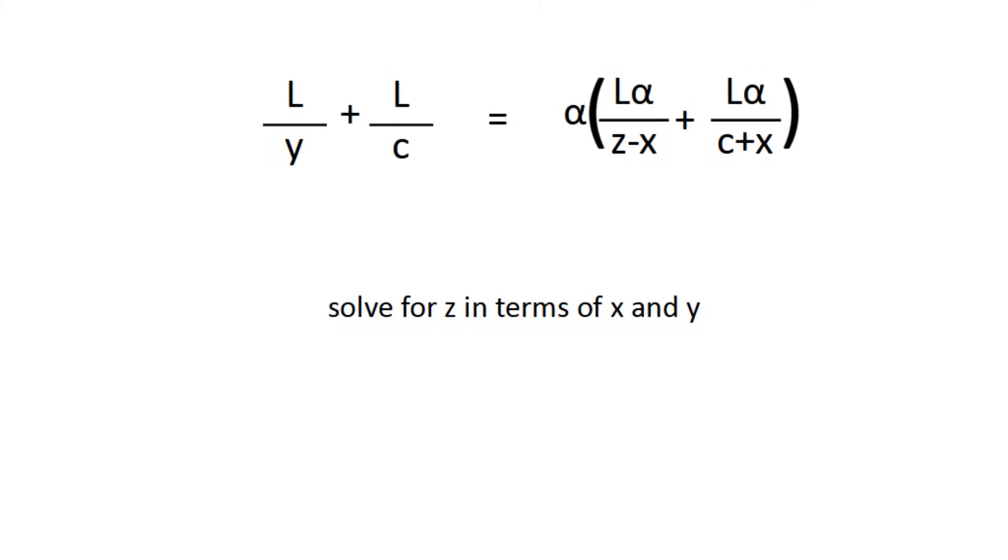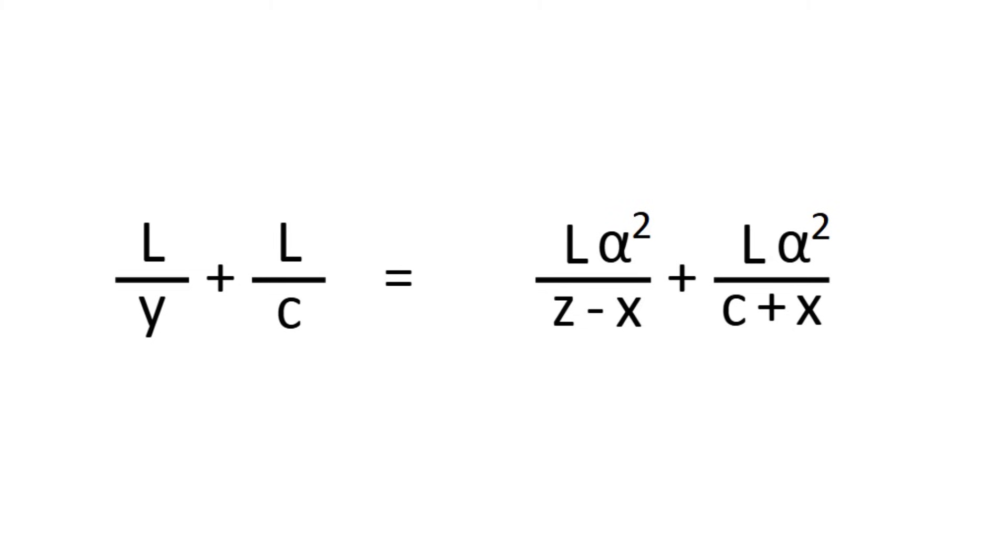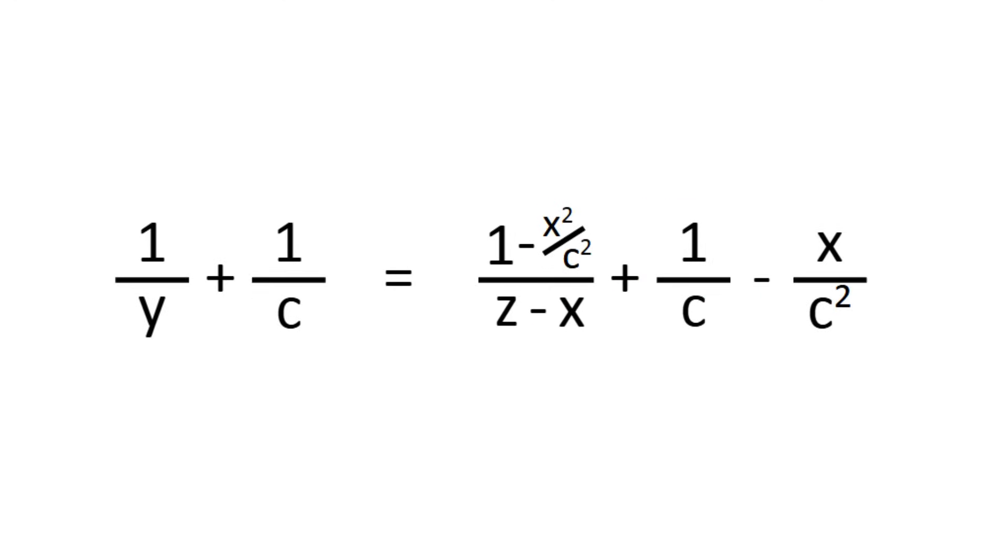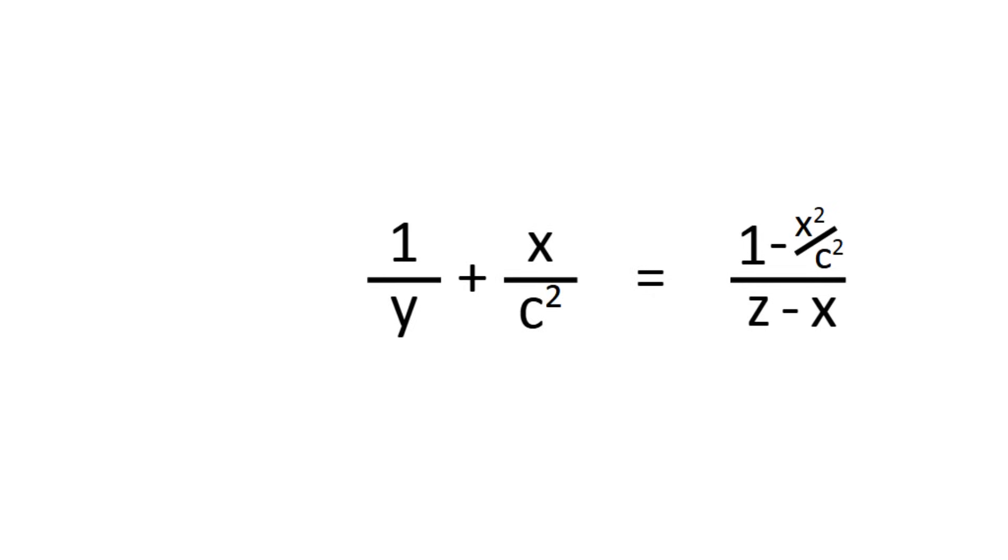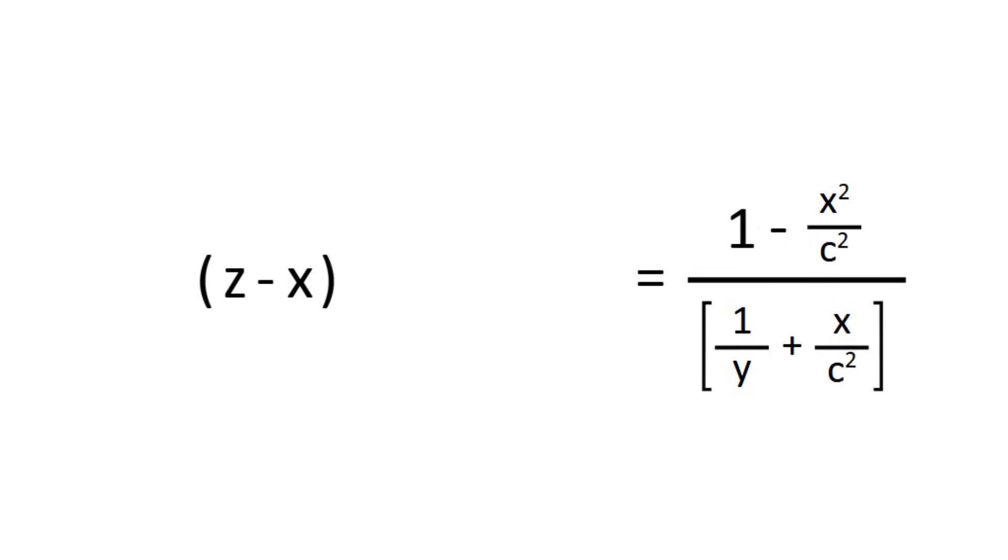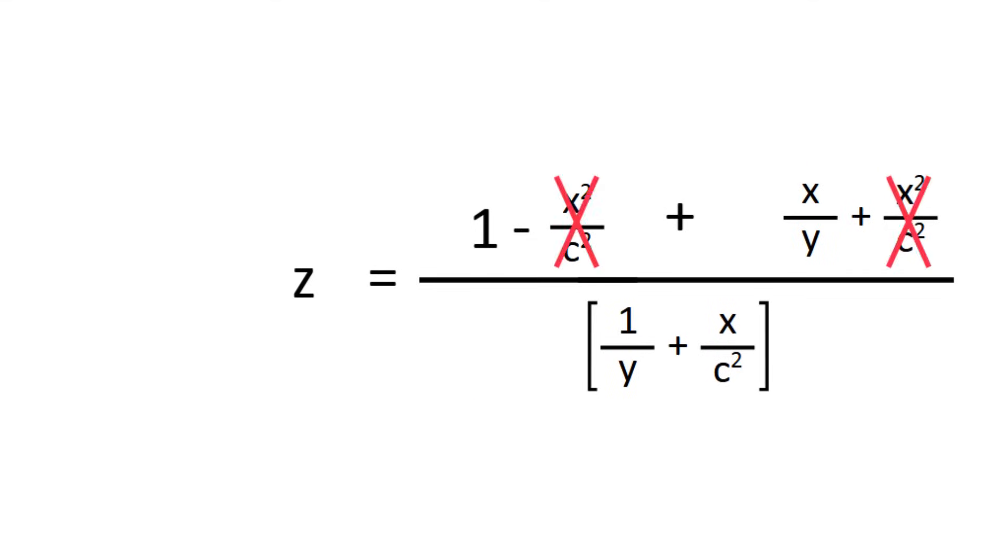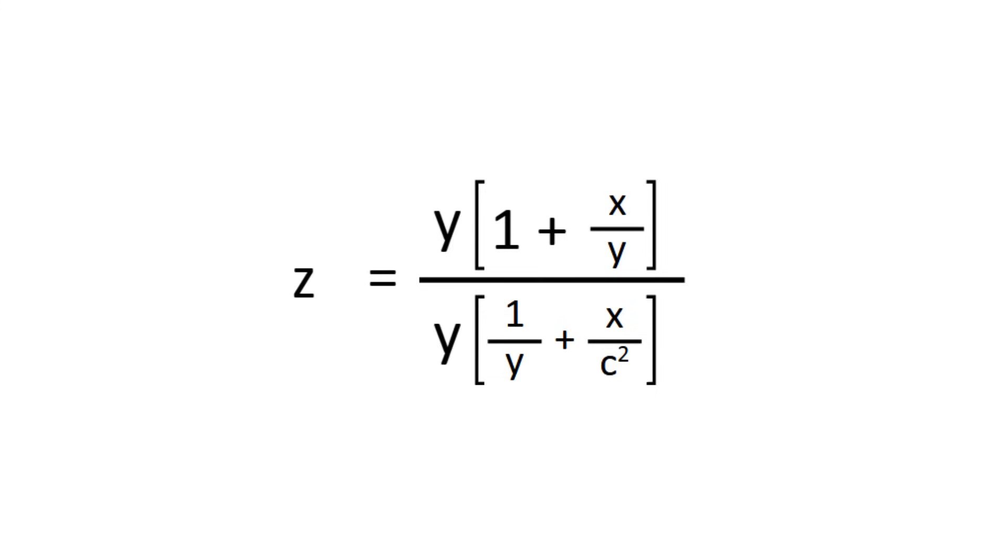Now it's time for the fun part, simplifying this equation to solve for z in terms of x and y. You can try this on your own if you want, but if not, here we go. First, we distribute this alpha. Then you might notice that every single term has an l in front, so we can divide everything by it to make it disappear. Then we'll replace alpha squared with 1 minus x squared over c squared. Now we'll focus on this term on the right for a bit. If we factor out a 1 over c squared, we get c squared minus x squared. This is a difference of two squares, so it becomes c plus x times c minus x. The c plus x cancels with the denominator, and we get c minus x over c squared, which is the same as 1 over c minus x over c squared. We can now subtract these to the other side, where the 1 over c cancels out. Then we multiply by z minus x, and divide by 1 over y plus x over c squared to swap them. To solve for z, we add x to the other side. We can combine the terms by making x have the same denominator, at which point x squared over c squared cancels out. Finally, we multiply the numerator and denominator by y to get the final equation.